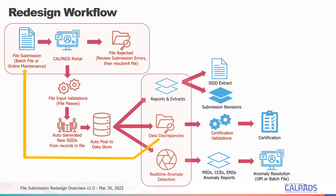This is the new workflow. Files come in from your SIS, you upload them, and if there is any record rejection the whole file rejects and you go back to fix it. But if the file uploads with no errors and passes all input validations, new SSIDs are generated and it posts to the ODS immediately. From there, data is accessible through reports and extracts, data discrepancies are generated, and anomalies run quickly thereafter — not as a nightly process.